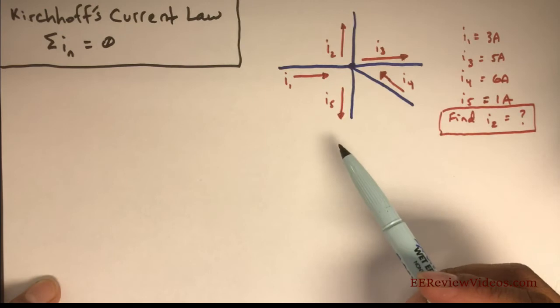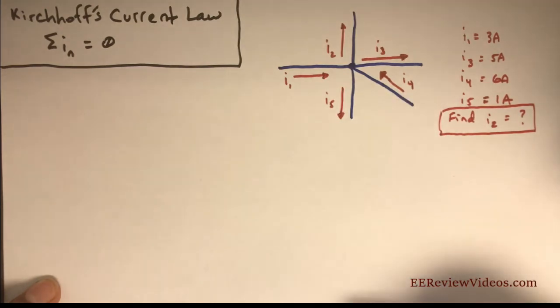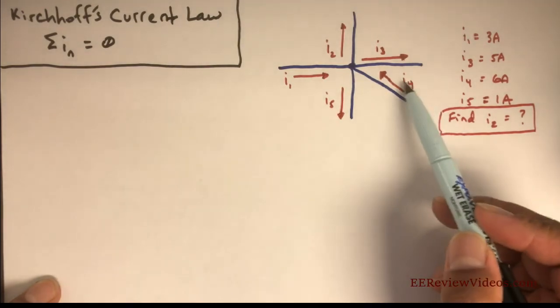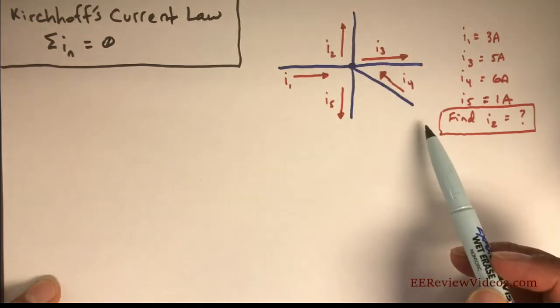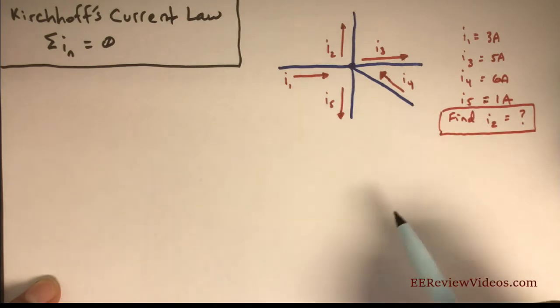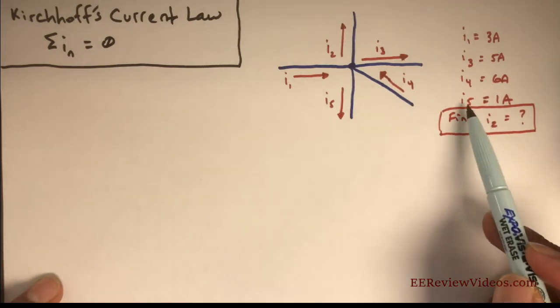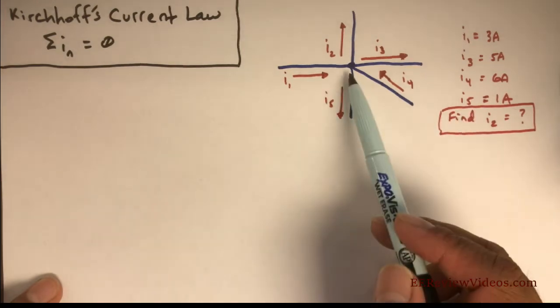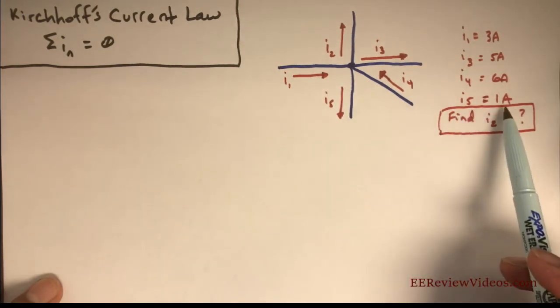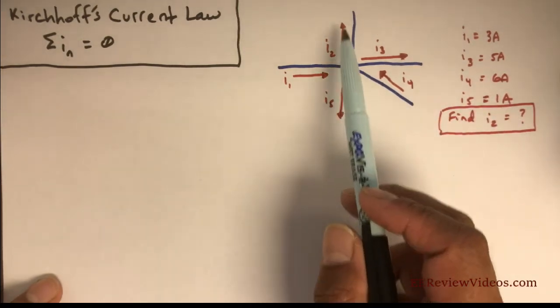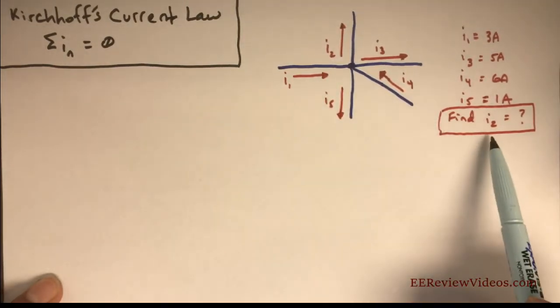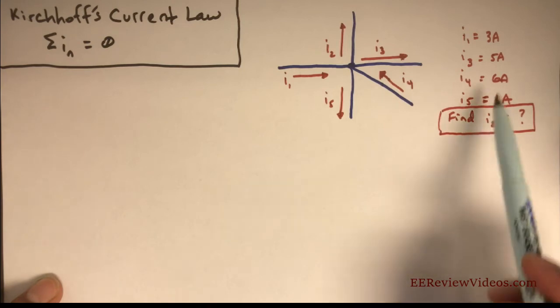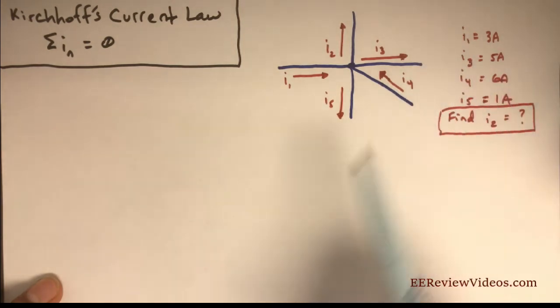Remember, the arrows here can be arbitrary. If this turns out to be a negative current, that just means the current is actually flowing away from that node - the polarity of the current is relative. I5, the current leaving the node, is 1 amp. The only current we don't know is I2. So how do we set up equations to solve for this unknown current? What's the relationship between all of these currents?